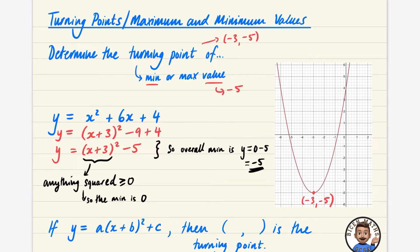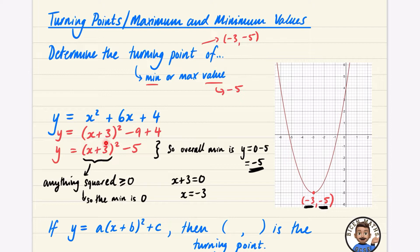The next thing is to think about when it reaches this minimum — when is the turning point? The minimum of the whole thing is -5, which occurs when (x + 3)² = 0, so x + 3 = 0, meaning x = -3. So x = -3 and y = -5, giving the turning point (-3, -5). The completed square shows us exactly when the function reaches its turning point.